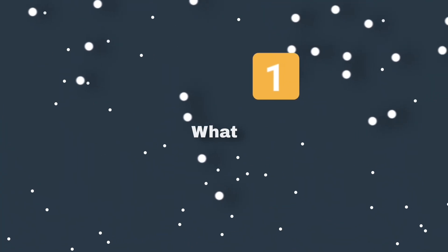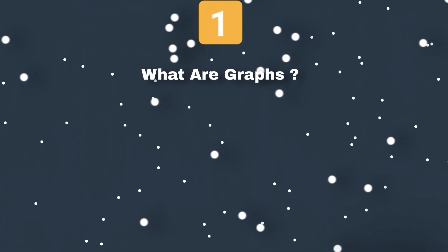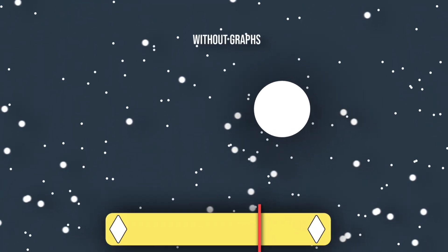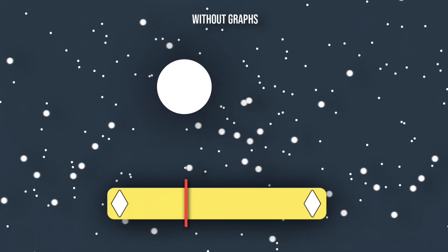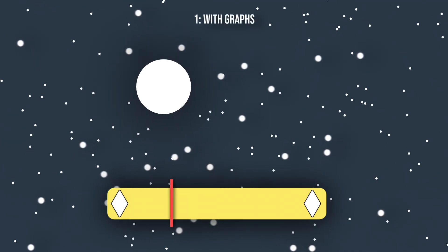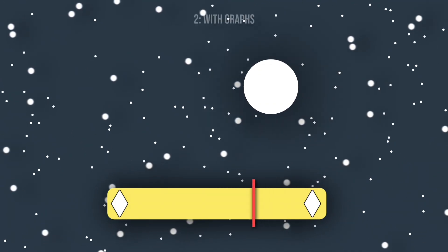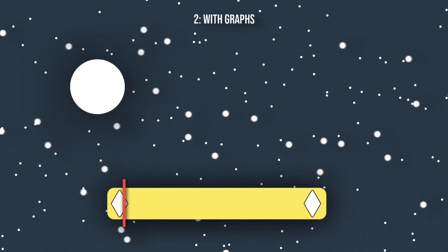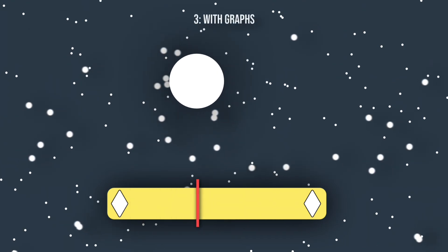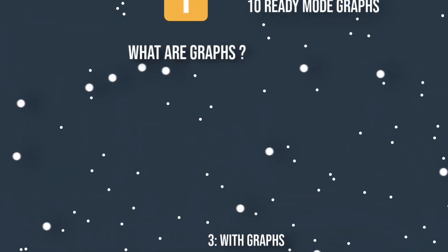Step number one: what are graphs? Graphs let you control the speed and flow between keyframes, making animations look smoother. Once you understand how they work, your edits will instantly look better.